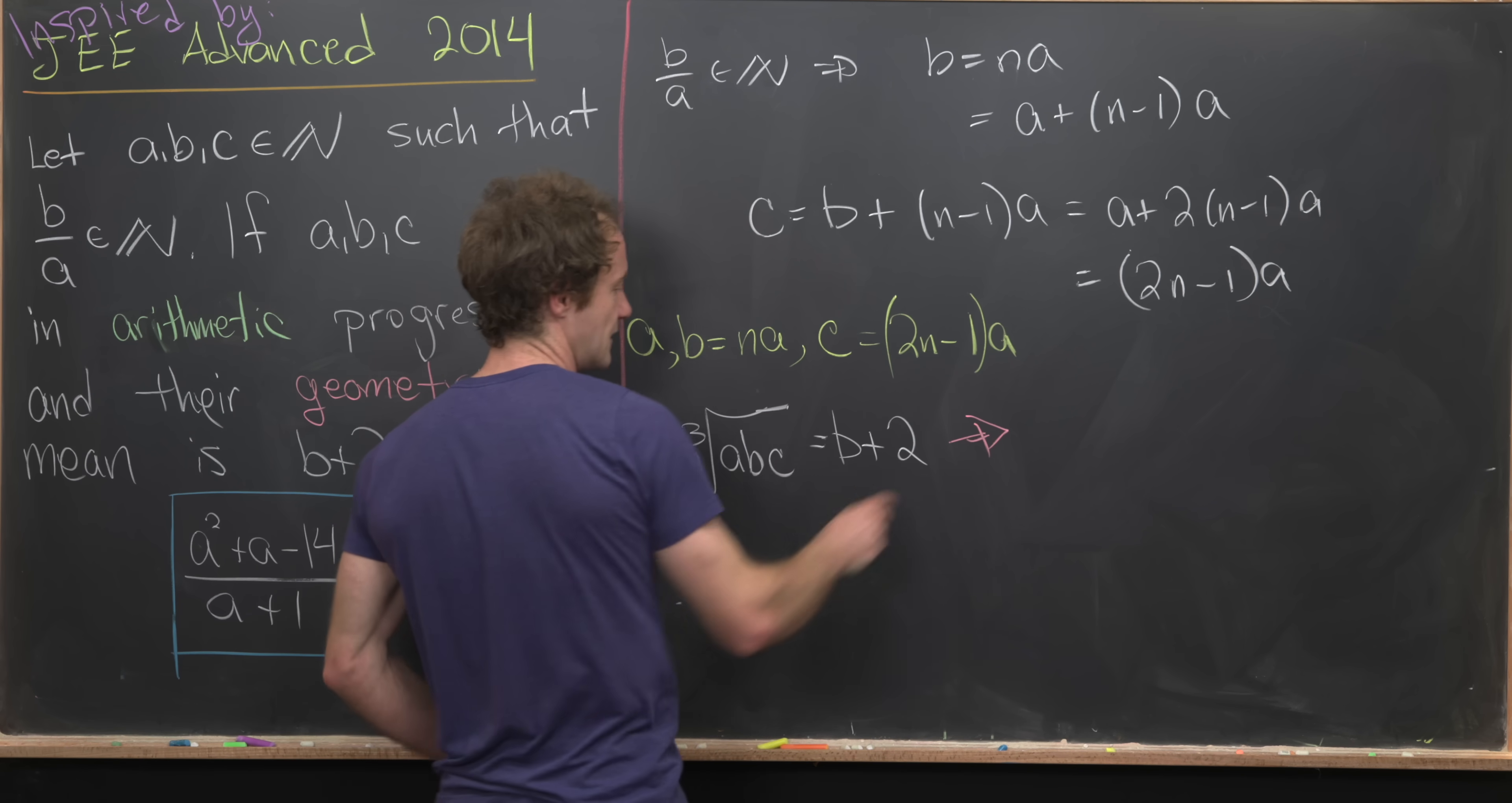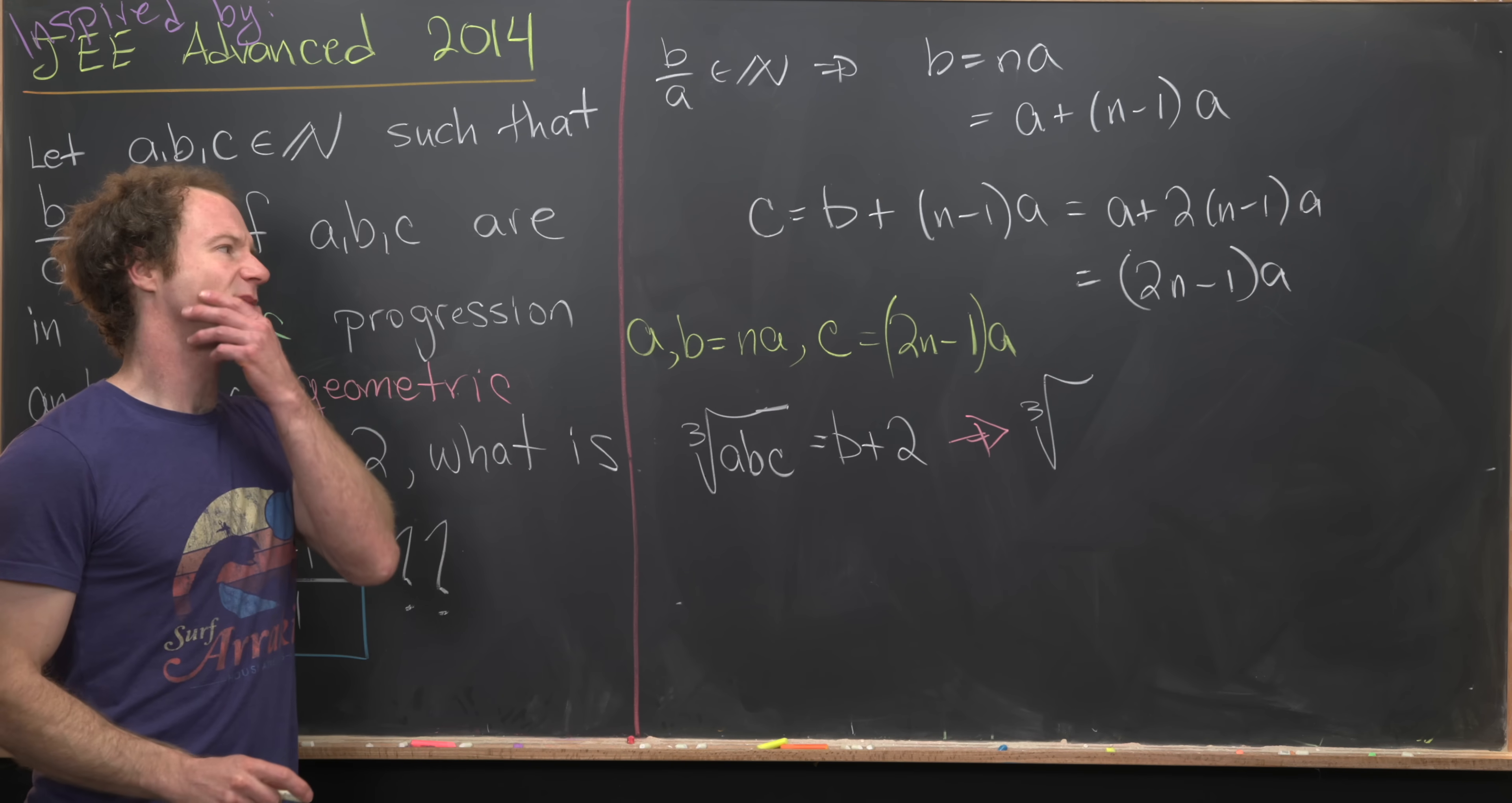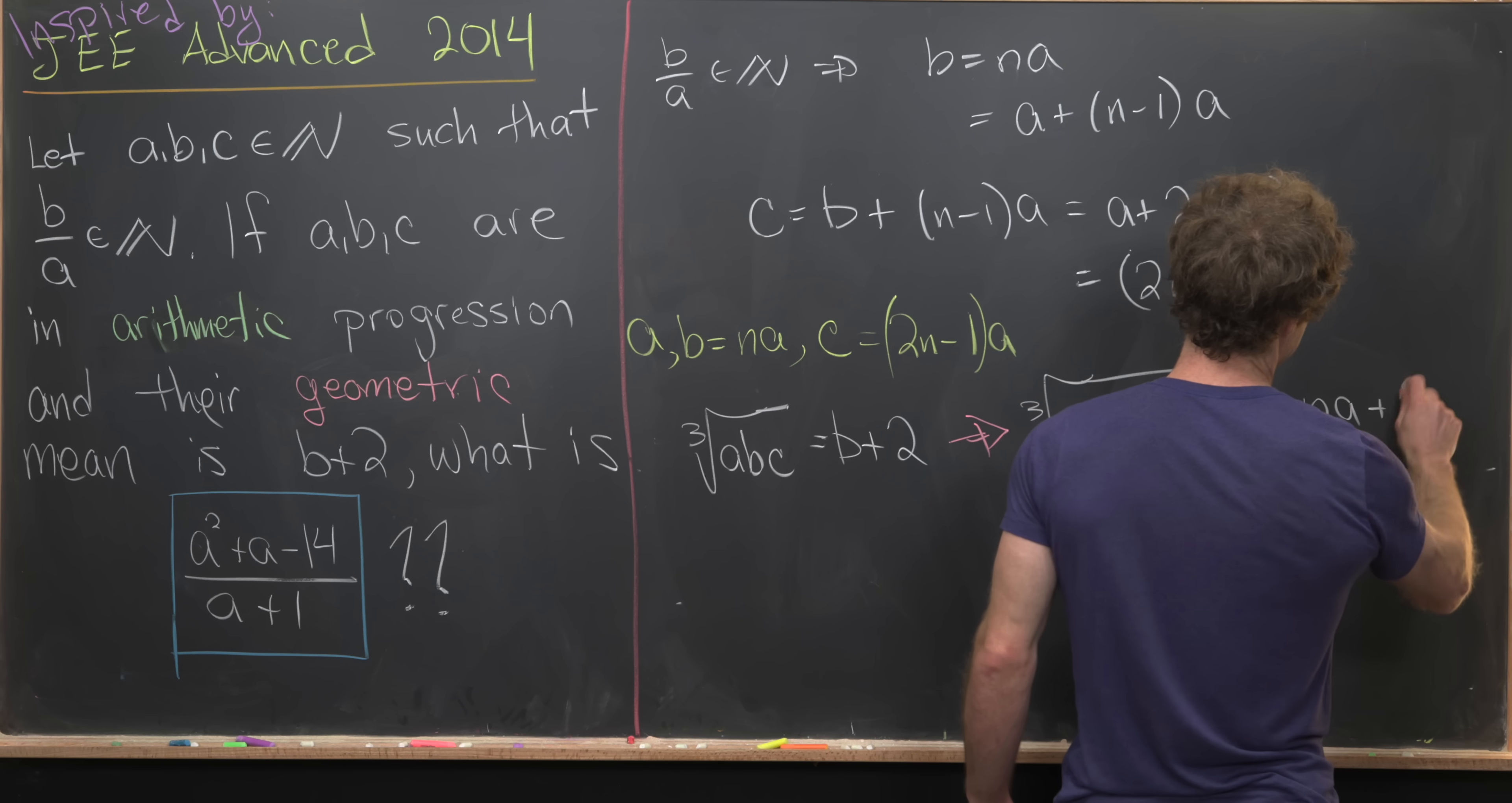So now we can write all of this in terms of A and N given our previous discussion. So here we have this is going to be the cube root of, well, let's see maybe the best way to write this out. This is going to be N times 2N minus 1 times A cubed is equal to B plus 2. So that's going to be NA plus 2.